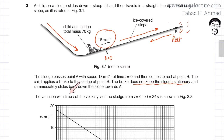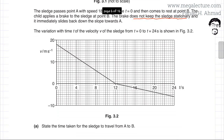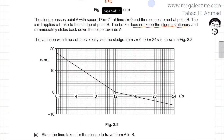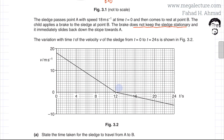The variation with time t of the velocity v of the sledge from t equals 0 to t equals 24 seconds is shown in figure 3.2. At t equals 0, the speed gradually decreases, and this is the rest point — this is point B where the child is at rest.